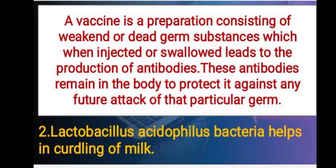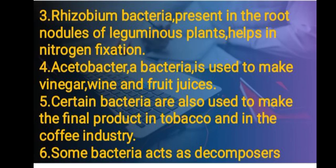You must have heard about curdling of milk — this is also done with the help of a bacterium called Lactobacillus acidophilus. Rhizobium bacteria present in the root nodules of leguminous plants help in nitrogen fixation. Acetobacter, which is also a kind of bacterium, is used to make vinegar, wine, and fruit juices. Certain bacteria are also used to make the final product in the tobacco and coffee industries.